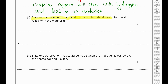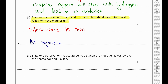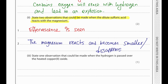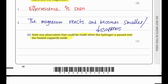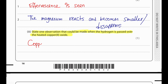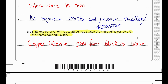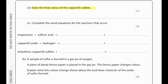When dilute sulfuric acid reacts with magnesium: effervescence is observed and the magnesium slowly disappears and becomes smaller. When hydrogen is passed over heated copper oxide, the black copper oxide turns orange or pink-brown as copper metal forms. Anhydrous copper sulfate turns from white to blue on addition of water. Word equations: magnesium + sulfuric acid → magnesium sulfate + hydrogen; copper oxide + hydrogen → copper + water; anhydrous copper sulfate + water → hydrated copper sulfate.